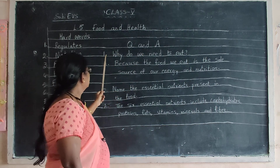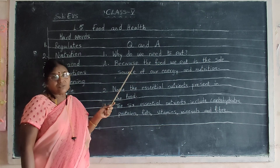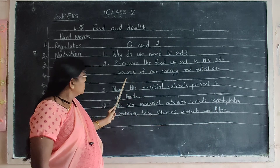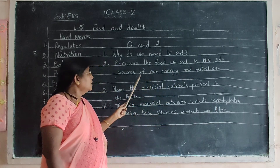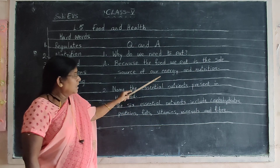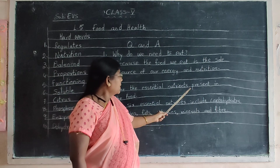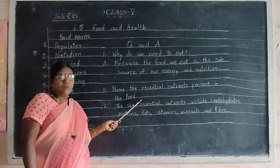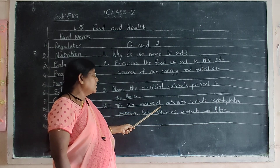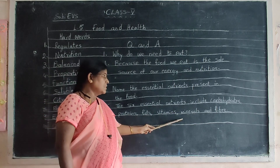Now question and answers. First question: Why do we need to eat? Answer: Because the food we eat is the sole source of our energy and nutrition. Second question: Name the essential nutrients present in the food. Answer: The essential nutrients are carbohydrates, proteins, fats, vitamins, minerals and fiber.